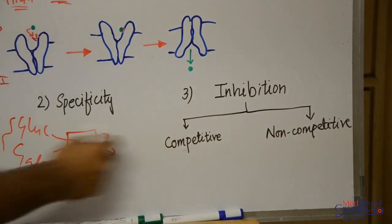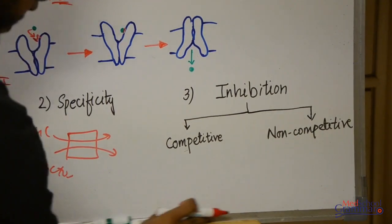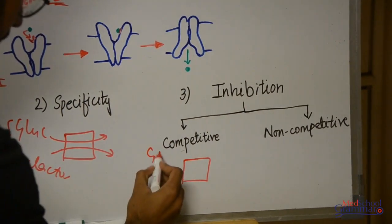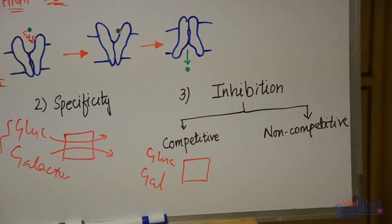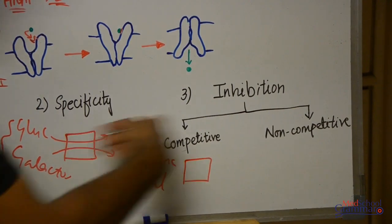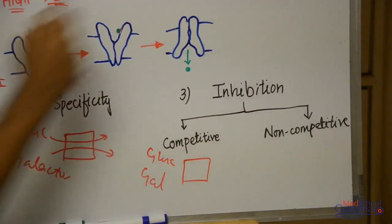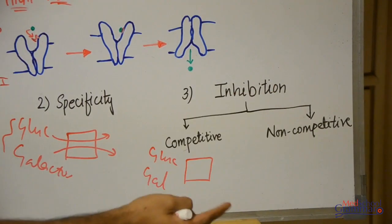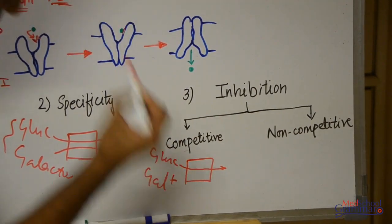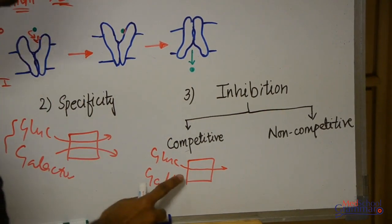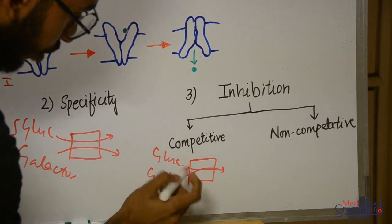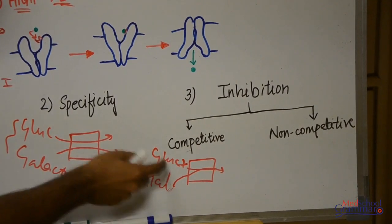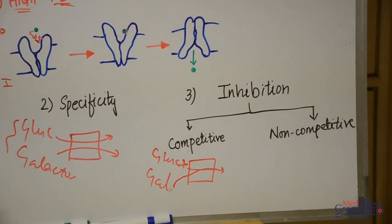The third property is inhibition, which is of two types: competitive and non-competitive. Competitive inhibition means there is competition. For example, if a carrier protein transports both glucose and galactose, and both are present, both want to diffuse to the other side — there is competition between them. The word 'inhibition' is used because if glucose moves, it will not allow galactose to move, so galactose diffusion is inhibited. Conversely, if galactose moves, glucose diffusion is inhibited. So there is competition and one molecule's movement inhibits the other.